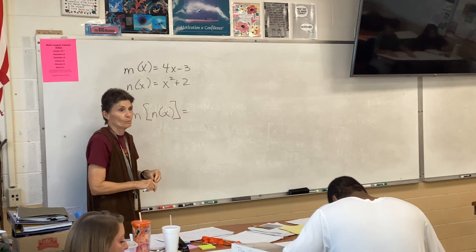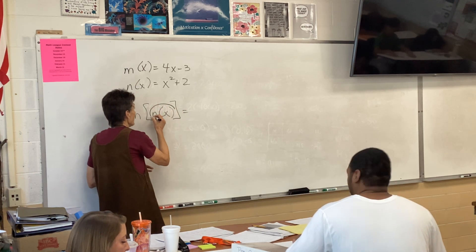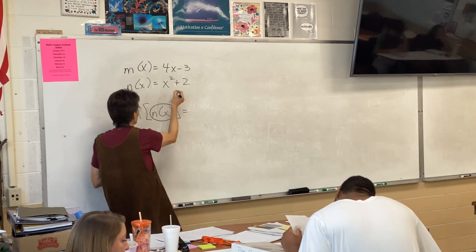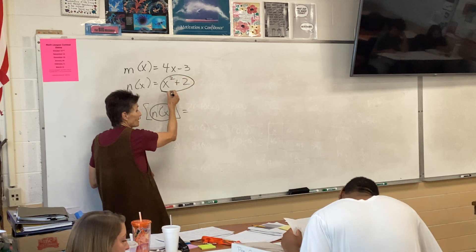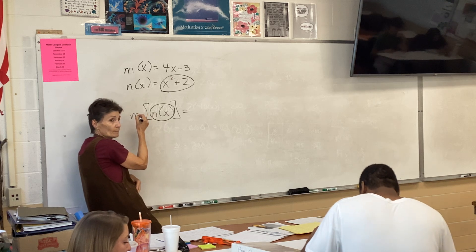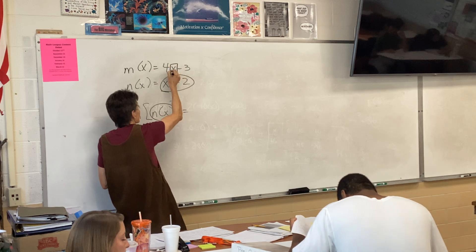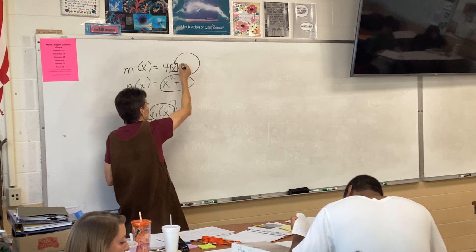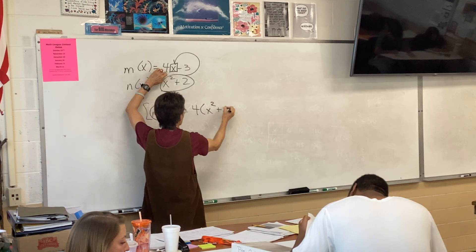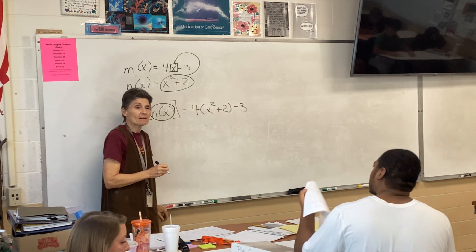What am I supposed to do with this? I take whatever n(x) is — that's n(x) right here — and I plug it into m. So right here is an x and I'm going to take this and plug it in there, so I'm going to have 4x² + 2 minus 3.